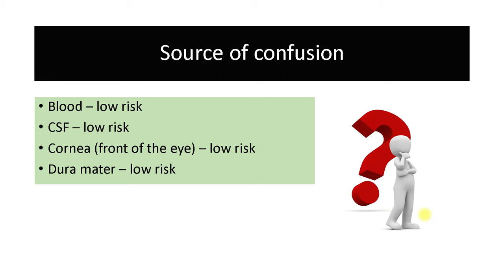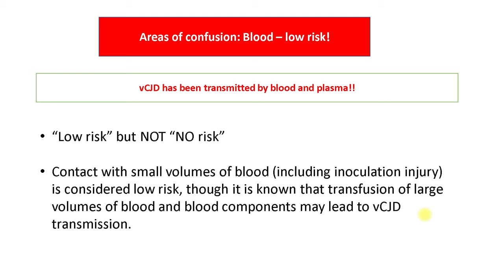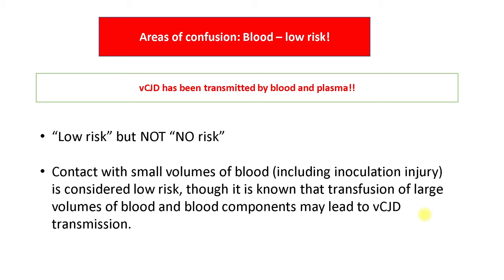Some tissues implicated in transmission were considered low risk. These are blood, CSF, cornea, and dura mater. Regarding blood, variant CJD has been transmitted by blood and plasma, but it is considered low risk — not no risk. Contact with a small volume of blood, including inoculation injury, is considered low risk. However, a large volume of blood and blood products may carry a risk, particularly important in patients who require regular or frequent blood transfusions due to their background disease.